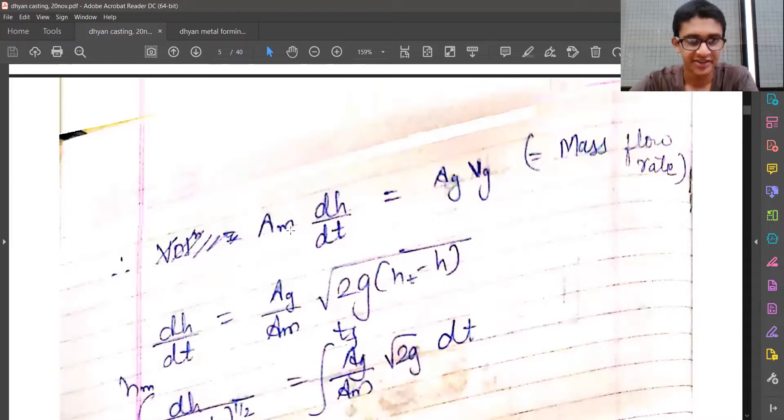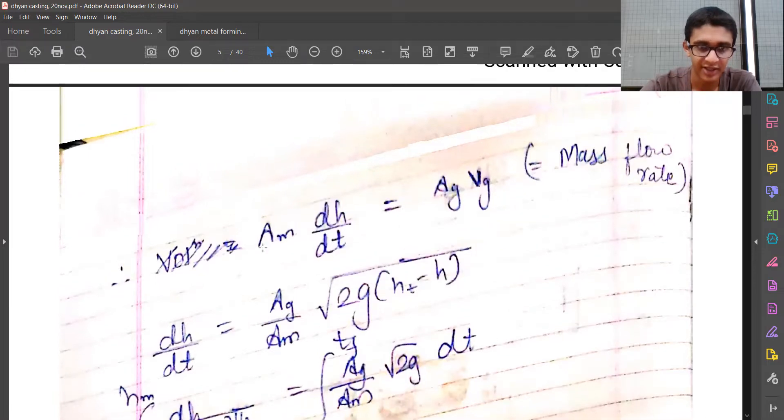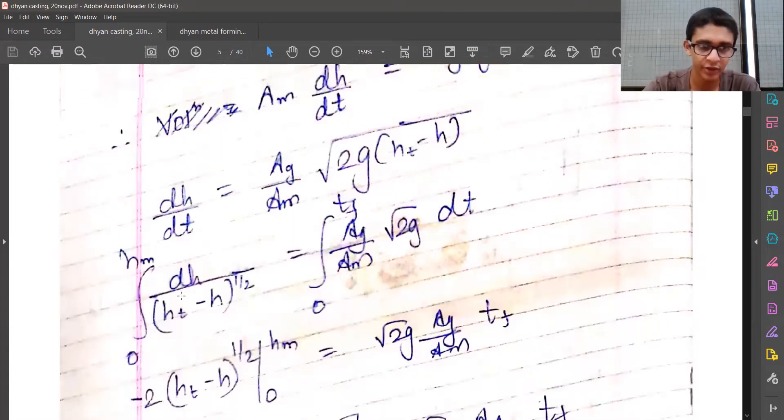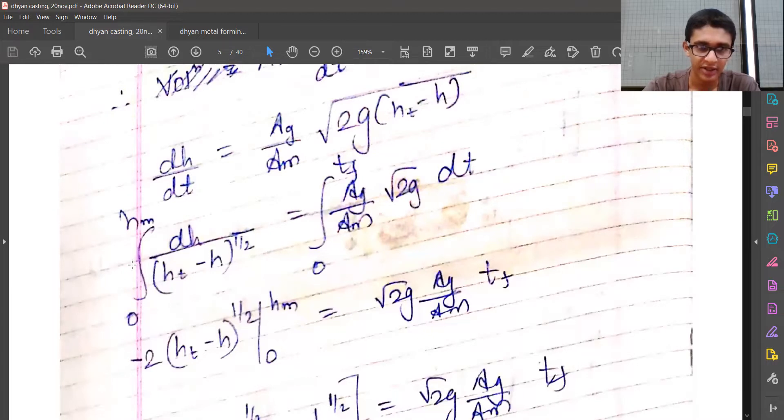Now, differential: Am times dh by dt equals Ag times vg, where dh by dt is the velocity of the free surface inside the mold. As we pour metal inside, the height increases. At the gate, the area is Ag and velocity is vg. From there, I'm going to find dh by dt, take dt over, and integrate the terms.